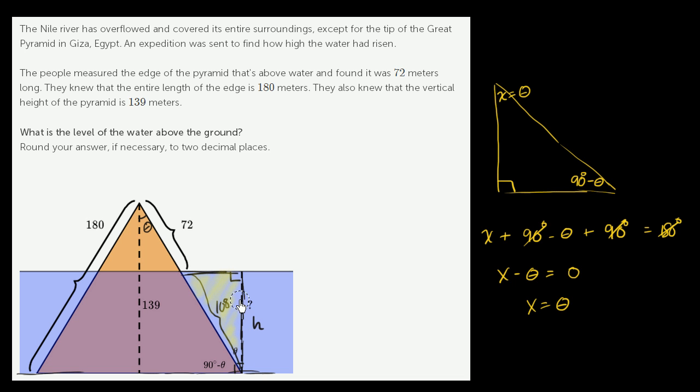If we look at that right triangle and we wanted to solve for h using a trig ratio based on this angle theta, relative to this angle theta, this side of length h is an adjacent side, and this length of 108 along the edge is the hypotenuse of this yellow triangle. Which trig ratio involves an adjacent side and a hypotenuse?